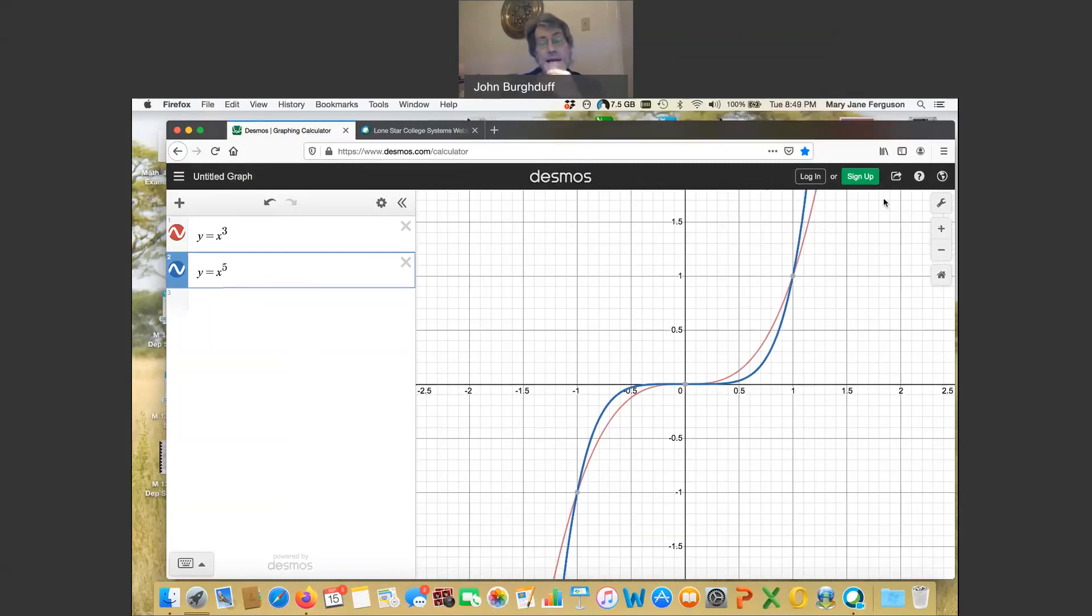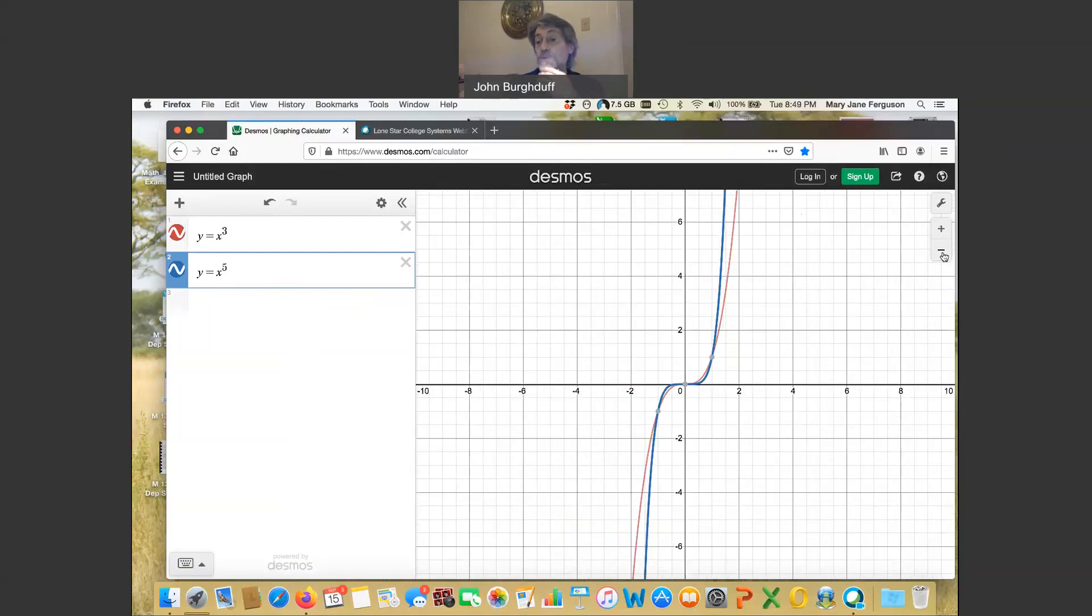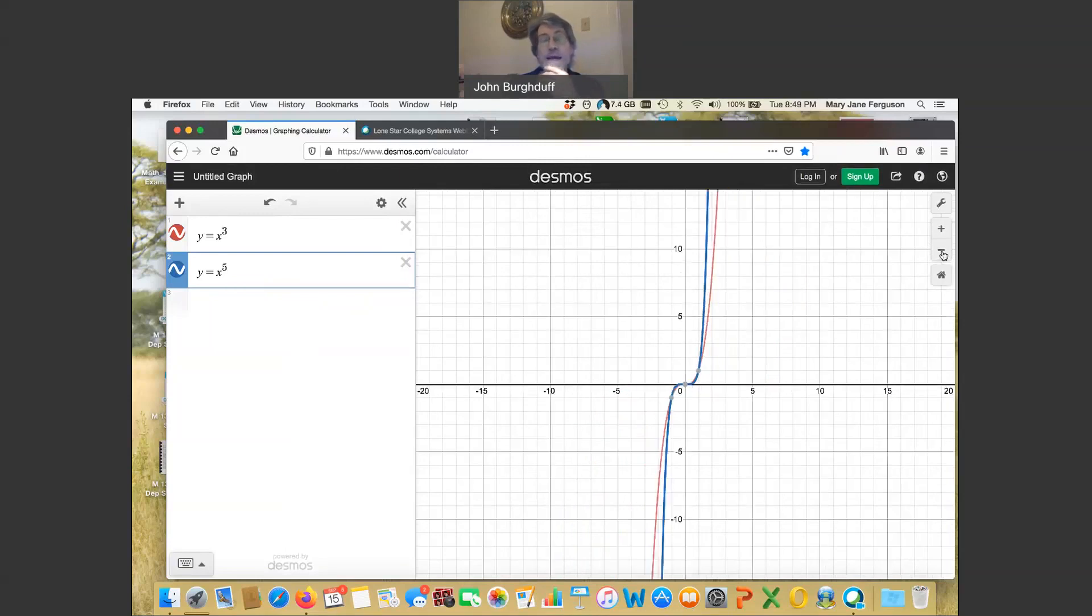So comparing the two graphs, they have a real similar shape. They go through some of the same points, as you can see here. But y equal x to the fifth is flatter when you're near the origin, and goes up more steeply as you get away from the origin. Let's go out one little farther. You can really see that.